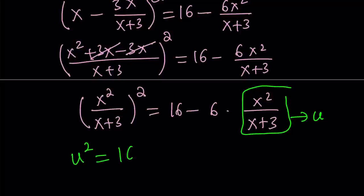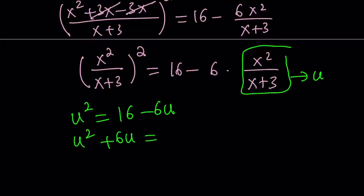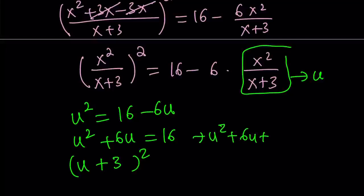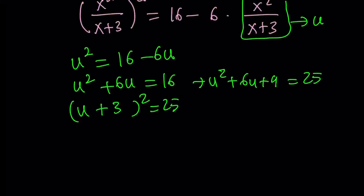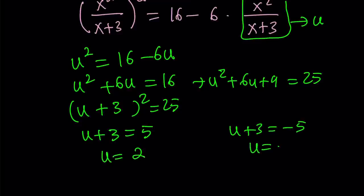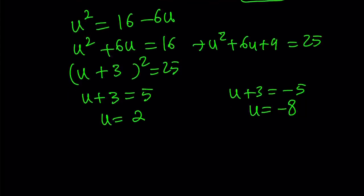u squared equals 16 minus 6u. And as you know, this is a quadratic equation. Let's go ahead and add 6u to both sides, and then add 9 to both sides to complete the square. If you add 9, the left hand side becomes u plus 3, quantity squared. Let me go ahead and show you right here what I mean. Add 9 to both sides and you'll get the following. So this is really nice because 25 is a perfect square, which means you're going to get integer solutions — at least for u. So u plus 3 is either 5 or u plus 3 is negative 5, which means u is 2 or negative 8. There are two solutions. You could also use the quadratic formula.